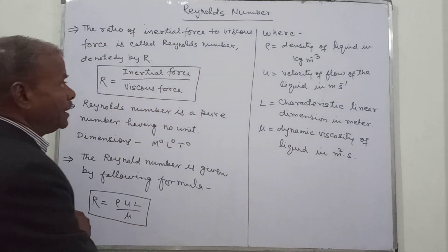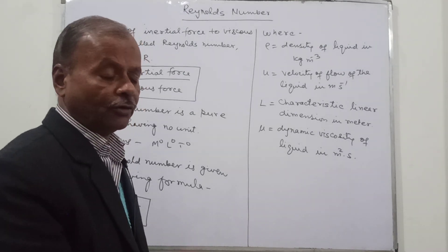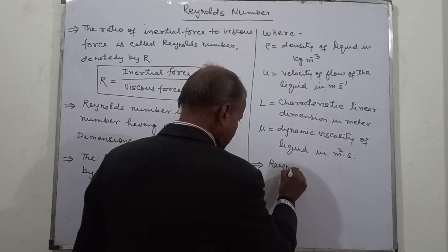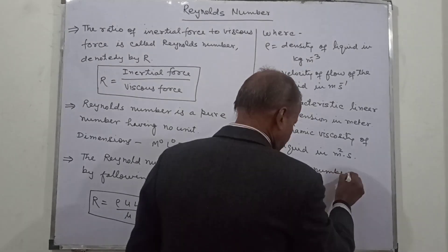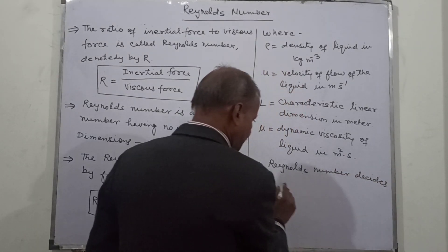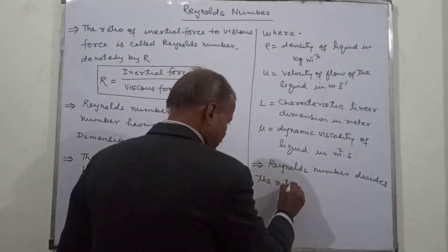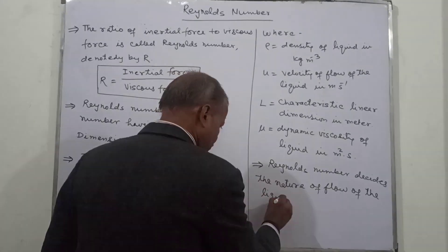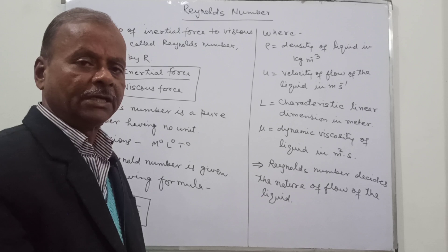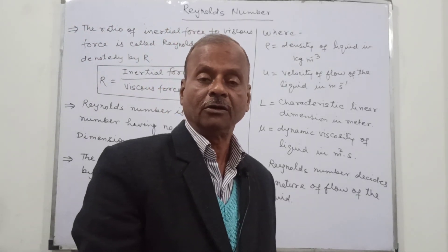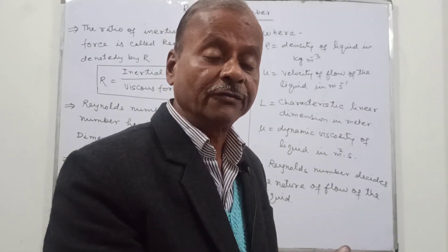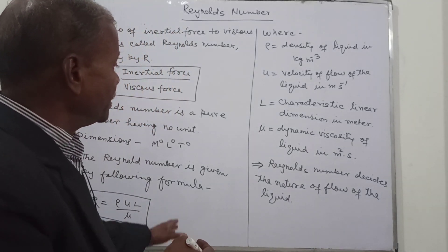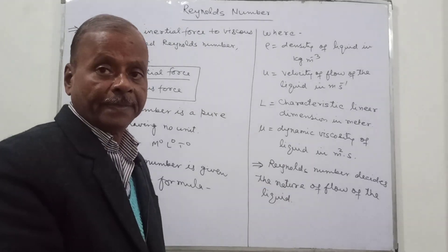So this is the formula. This Reynolds number decides the nature of the flow of the liquid — meaning it determines whether the flow will be streamline or turbulent. The nature of flow is based upon this Reynolds number.